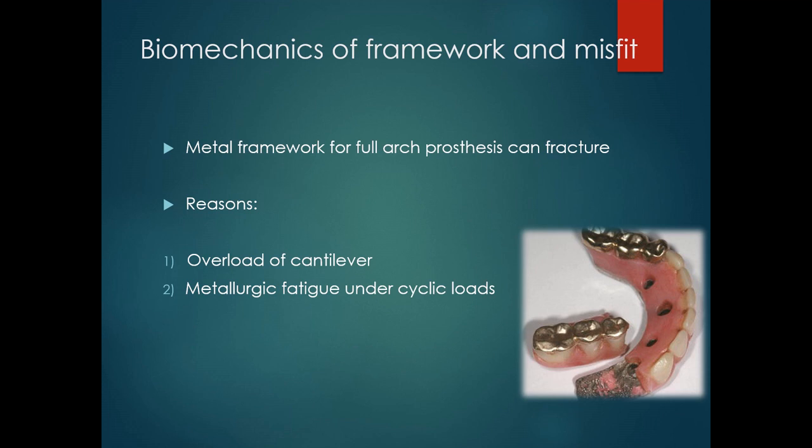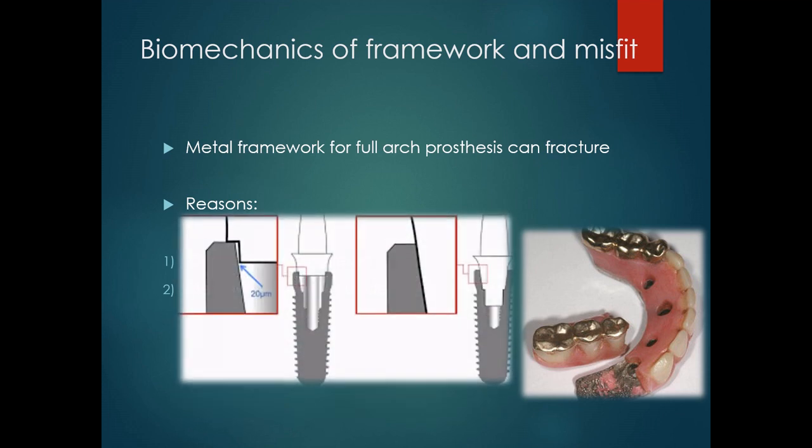Metal frameworks of full-arch prostheses also fractured, especially in the cantilever area. The reasons were overload of the cantilever and metallurgic fatigue under cyclic load. This can be prevented by a substantial increase of the cross-sectional area of the framework.